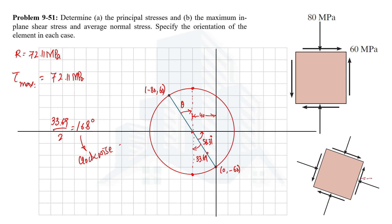Starting from the initial state, the element is rotated clockwise by 16.8 degrees. At this orientation, the shear stress on both planes has a magnitude of 72.11 MPa. The normal stress on both planes is equal to the center value of 40 MPa, compressive, since it is on the negative side. So both faces show a normal stress of 40 MPa and a shear stress of 72.11 MPa.